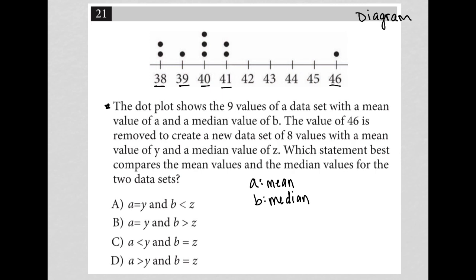The value of 46 is removed to create a new data set of eight values with a mean value of Y and a median value of Z. I'm going to write that down as well. Y becomes my mean and Z becomes my median when I remove 46. This is with 46.